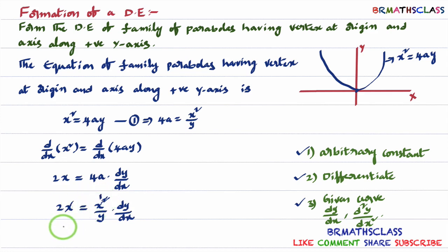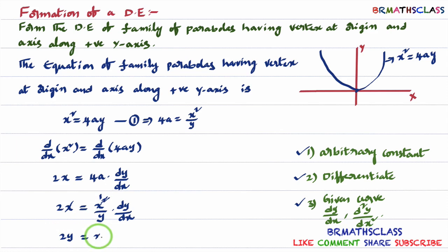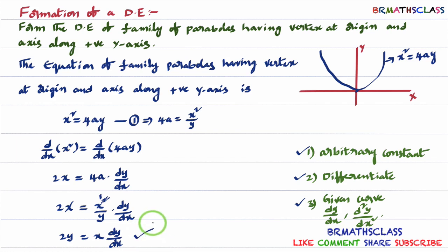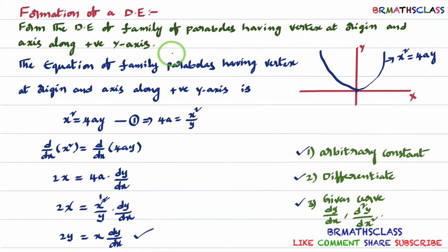A little simplification is possible. Here one x and one x get cancelled, and taking y to the other side, we get 2y = x·(dy/dx). This is the required differential equation for the family of parabolas having vertex at origin and axis along positive y-axis.